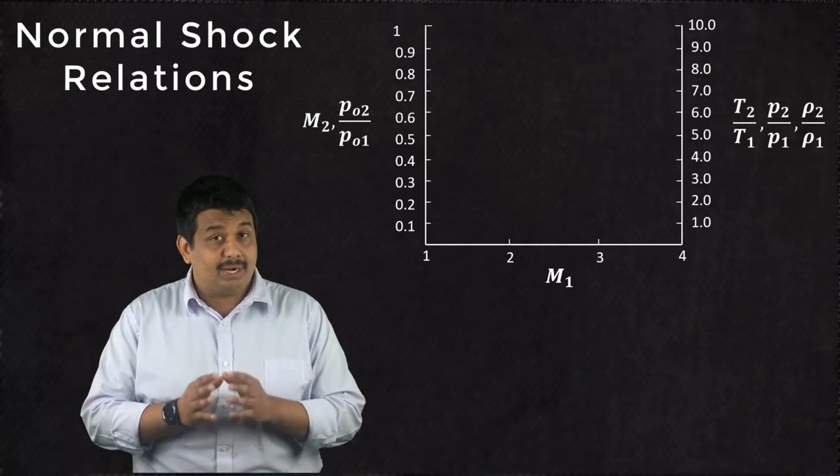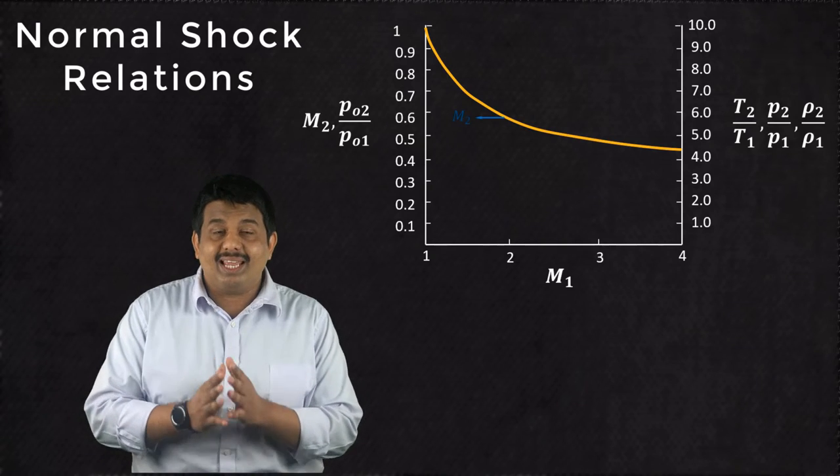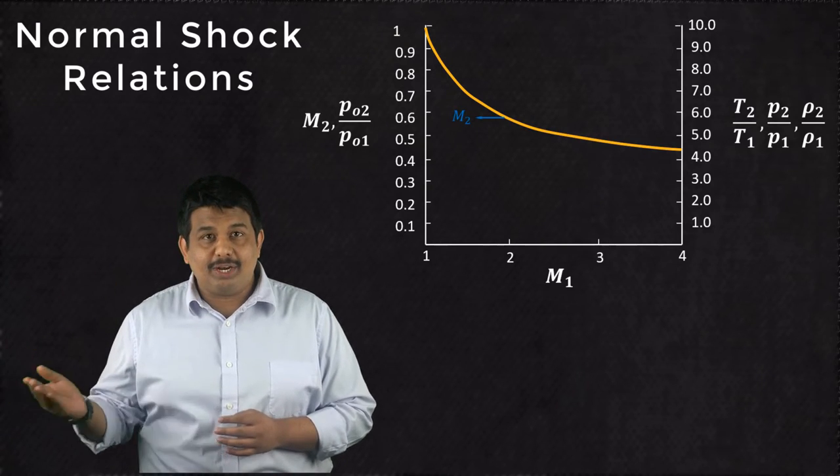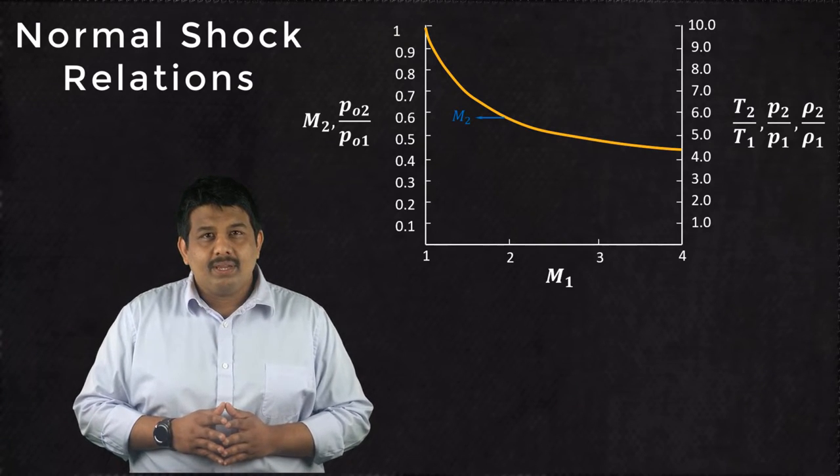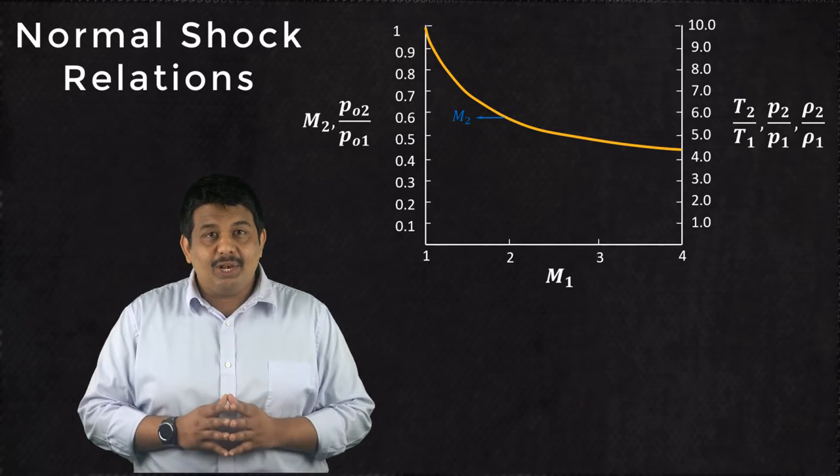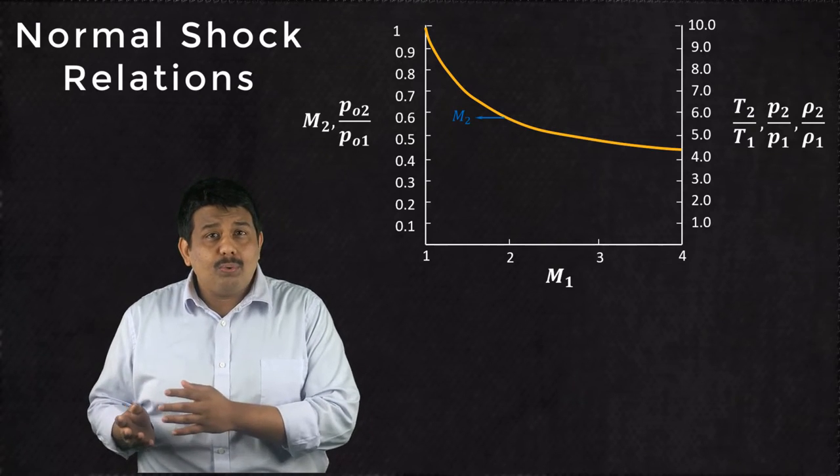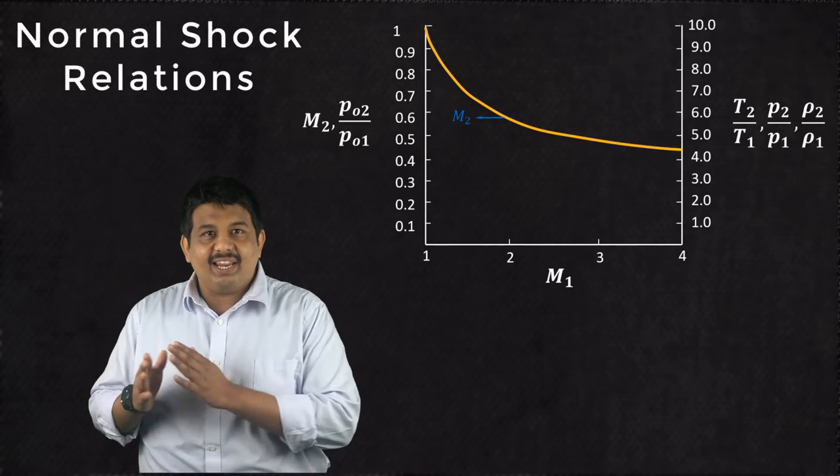The downstream Mach number M2 decreases with increasing values of upstream Mach number M1. At very large values of M1, M2 approaches a constant finite value.